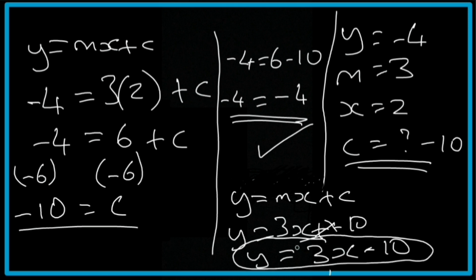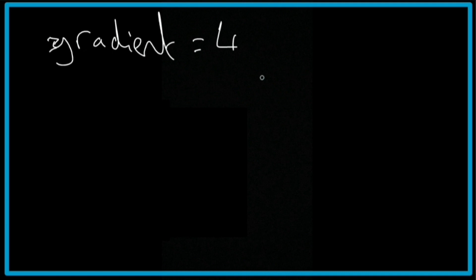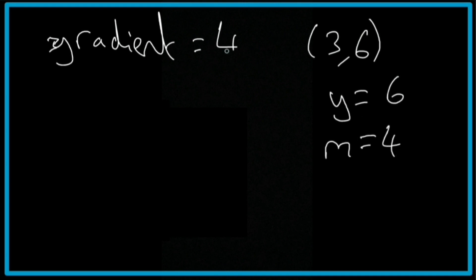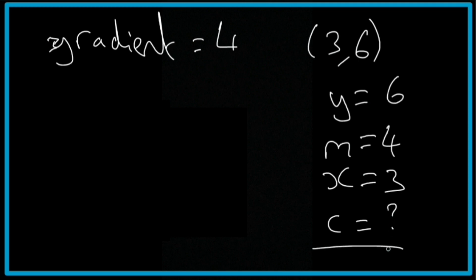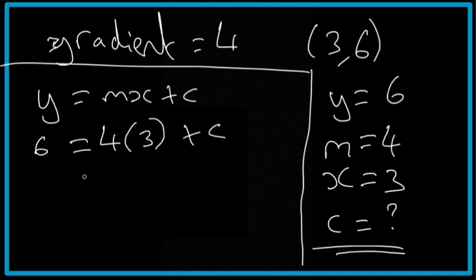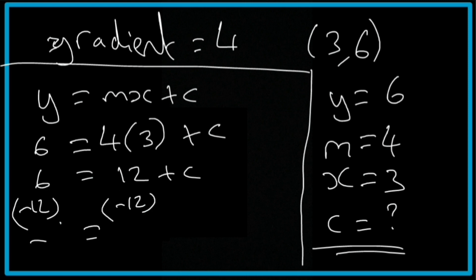Now for the second example: gradient = 4, passing through the point (3, 6). Listing what we have: y = 6, m = 4, x = 3, and c is what we're trying to work out. So y = mx + c gives us 6 = 4 × 3 + c, which is 6 = 12 + c. Subtracting 12 from both sides: 6 - 12 = c, so c = -6.